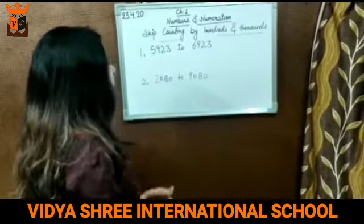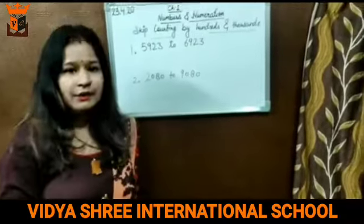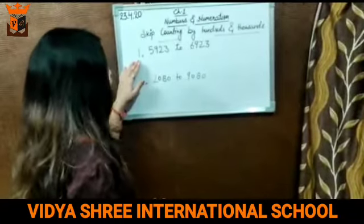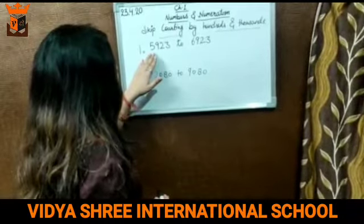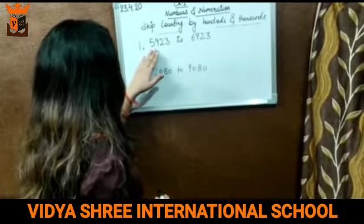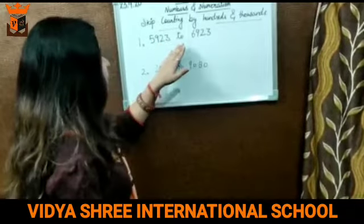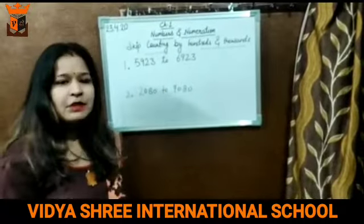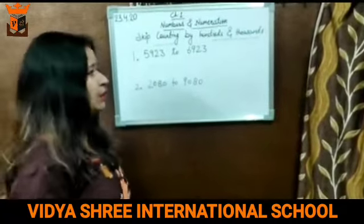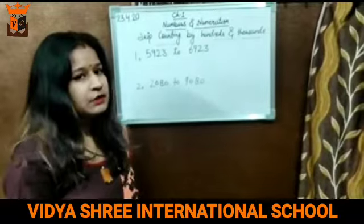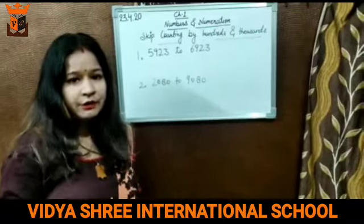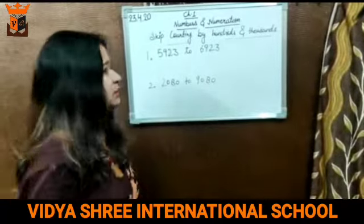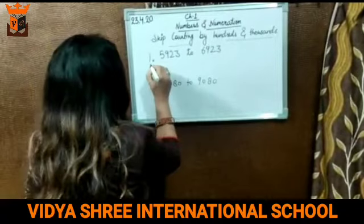Firstly, I have taken an example of hundred skip counting. Here a question is given, and this question is asking that skip counting by hundred from 5923 to 6923. So firstly, we are doing skip counting by hundred. We will simply add one hundred to the previous number to get the next number. So let's start our process from here.